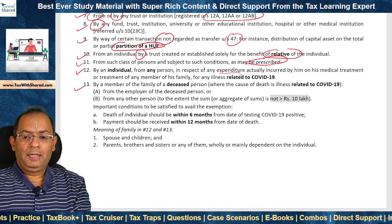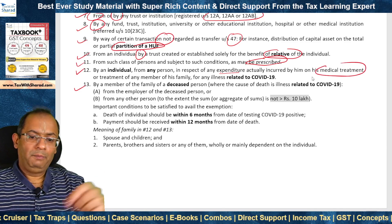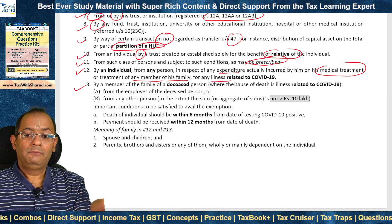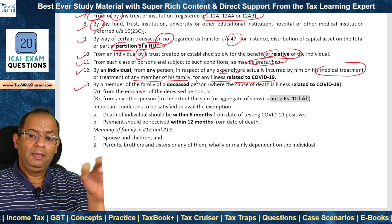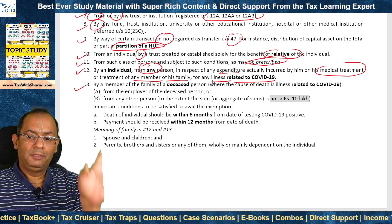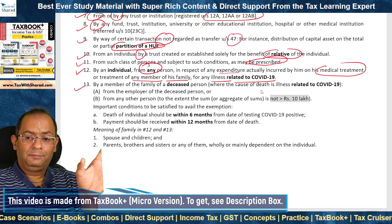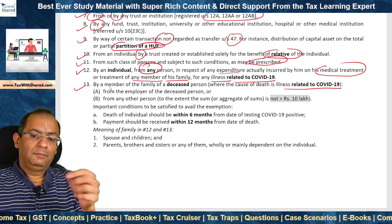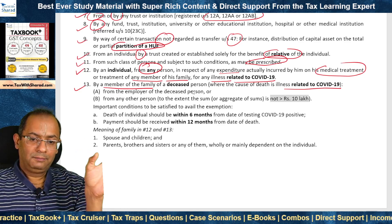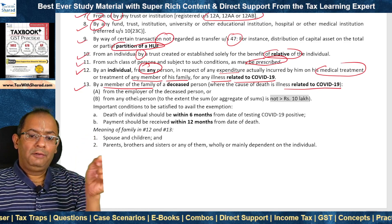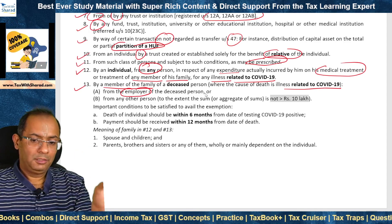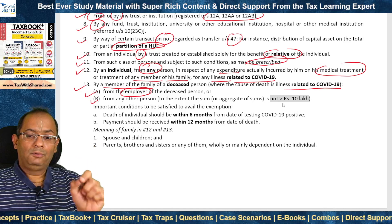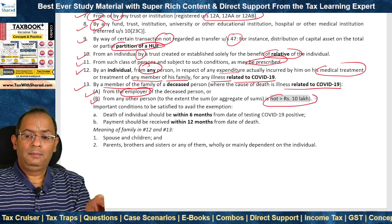Serial number 12: if an individual incurs expenditure on medical treatment of himself or any member of his family for any illness related to COVID-19, and receives reimbursement on that count from any person, that amount is not taxable under Section 56(2)(x). Serial number 13: if a person has died because of illness related to COVID-19 and an ex-gratia payment is received by a member of the family of the deceased — two situations: if received from the employer of the deceased, it is not taxable under Section 56(2)(x); if received from any other person (other than the employer), it is exempt to the extent the aggregate does not exceed ₹10 lakhs. Beyond ₹10 lakhs, it becomes taxable.